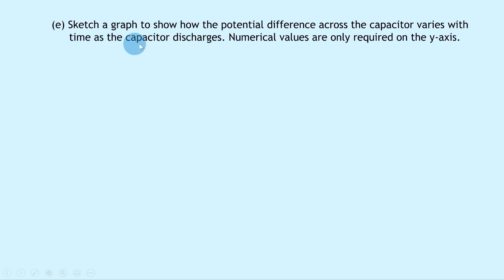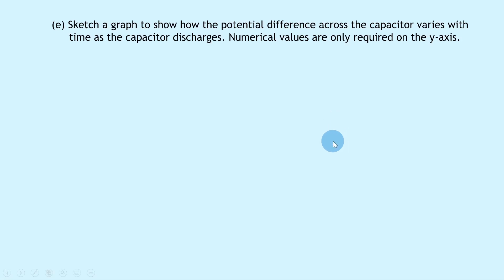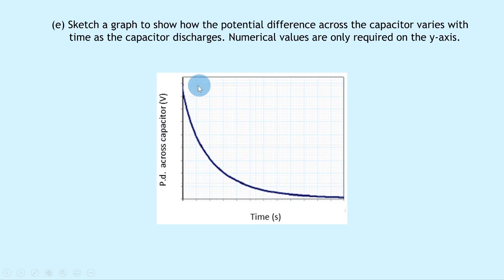Part E: sketch a graph to show how the potential difference across the capacitor varies with time as it discharges. Numerical values are only required on the y-axis. The graph shows potential difference decreasing over time, and we label the maximum potential difference on the y-axis as 12 volts. That's all for this video folks, thanks for watching. Make sure to give the video a like, subscribe to the channel and I'll see you in the next one.